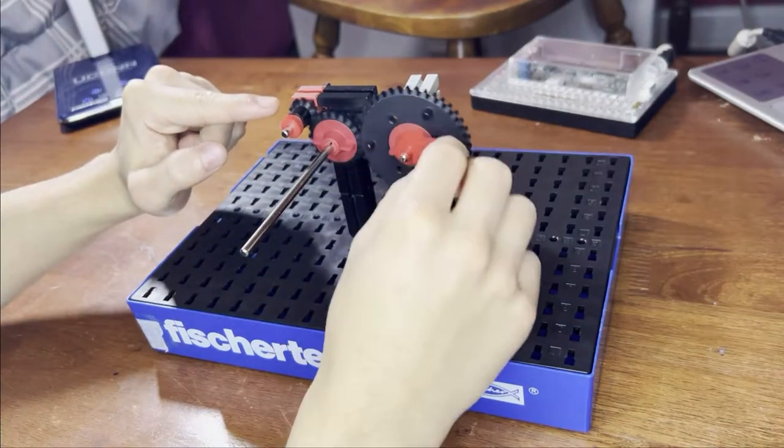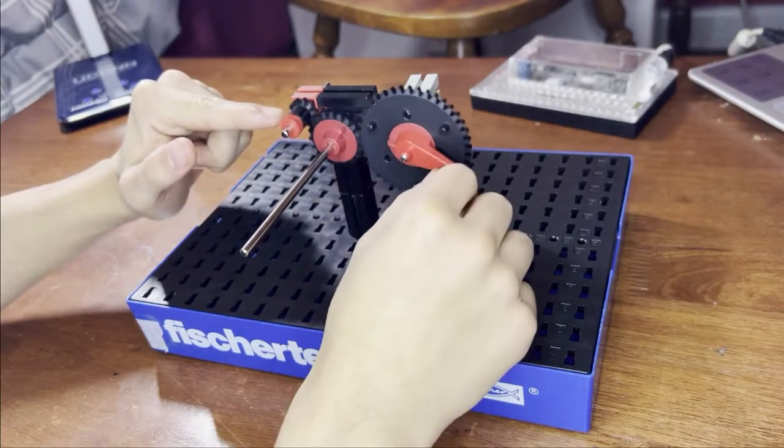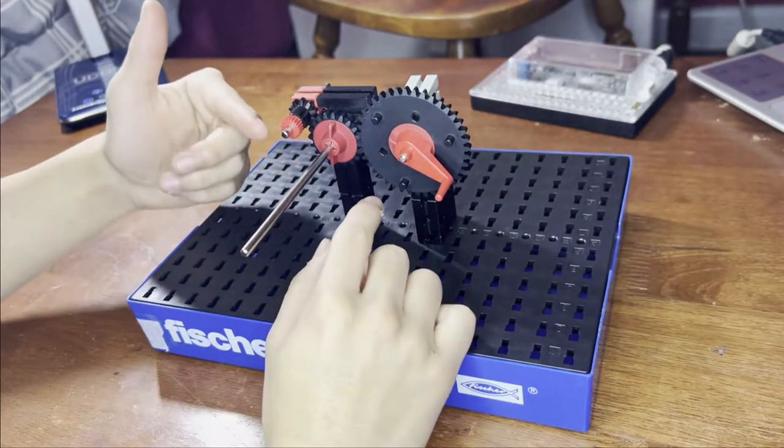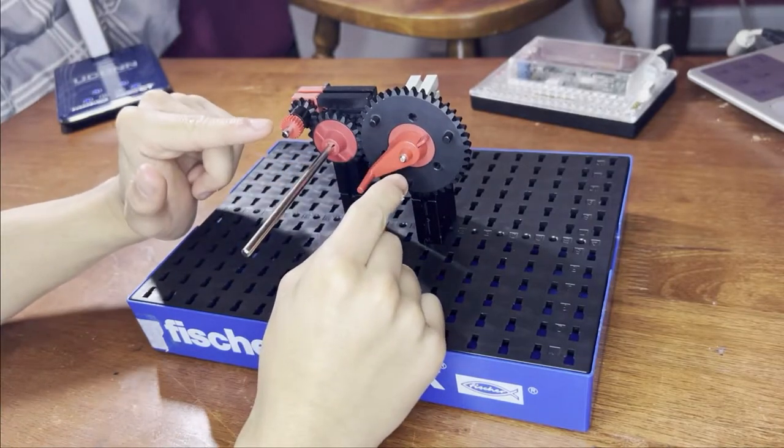Then there's the driven gear which is one that is turned by the gear and that is the output of the system. Connecting the two gears sometimes will be an idler gear which transfers the movement between the two gears on each side of it.